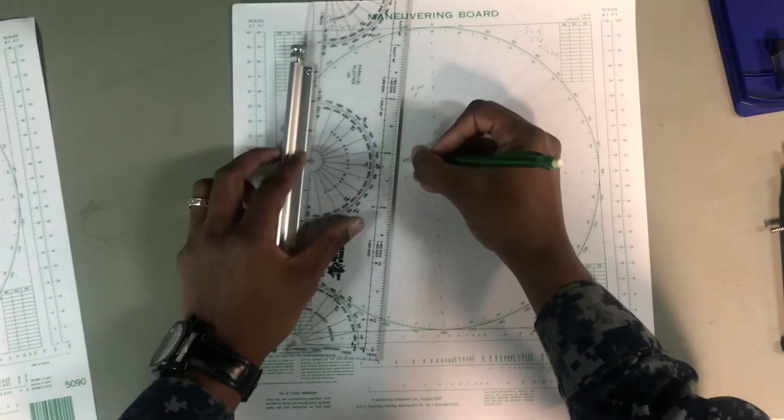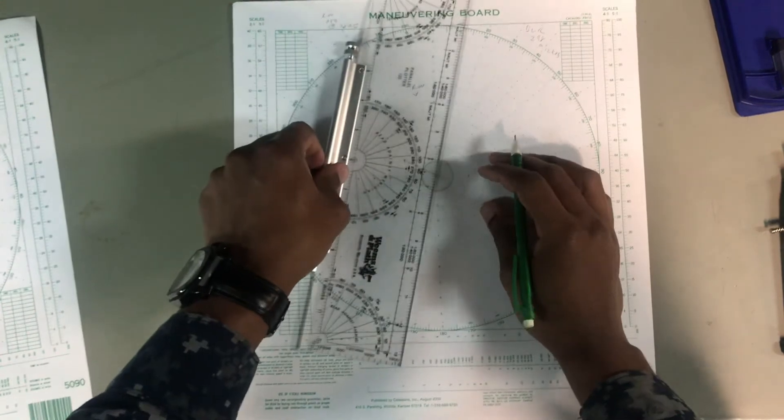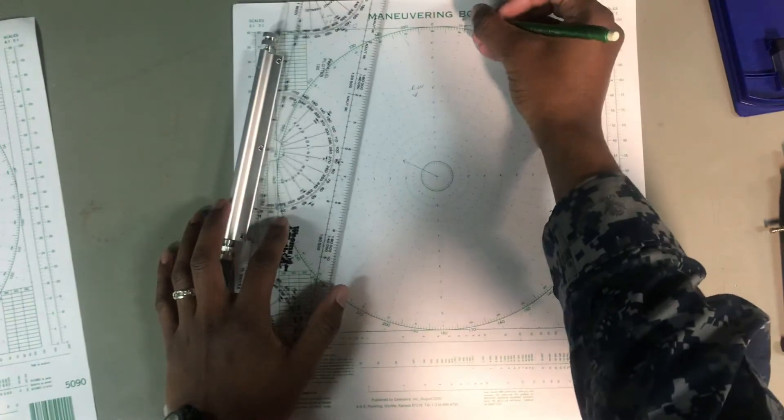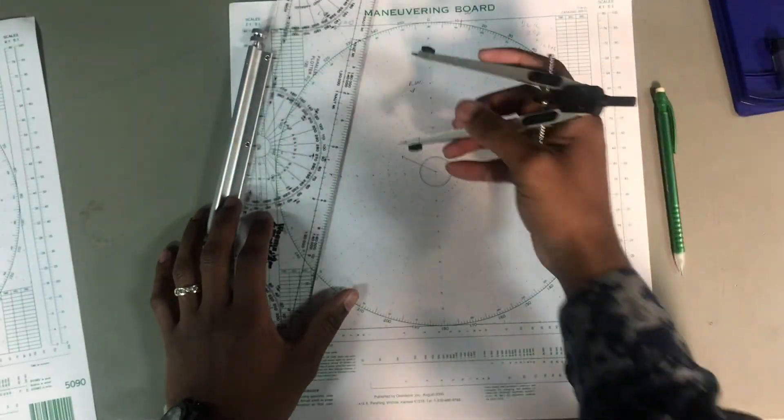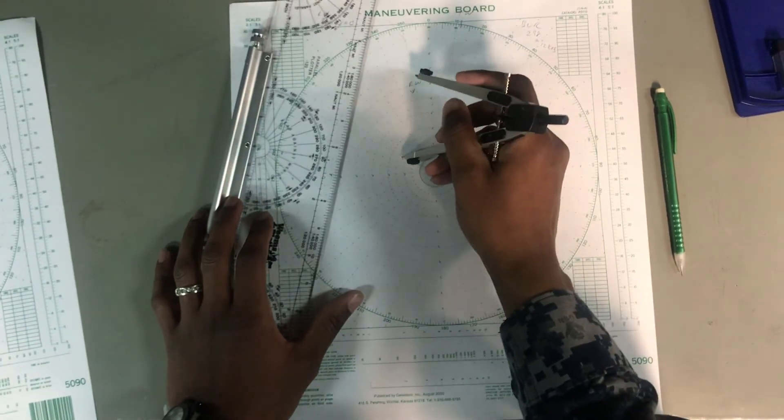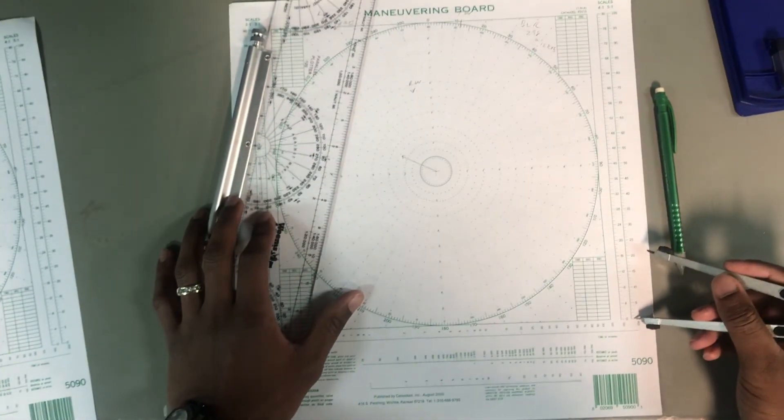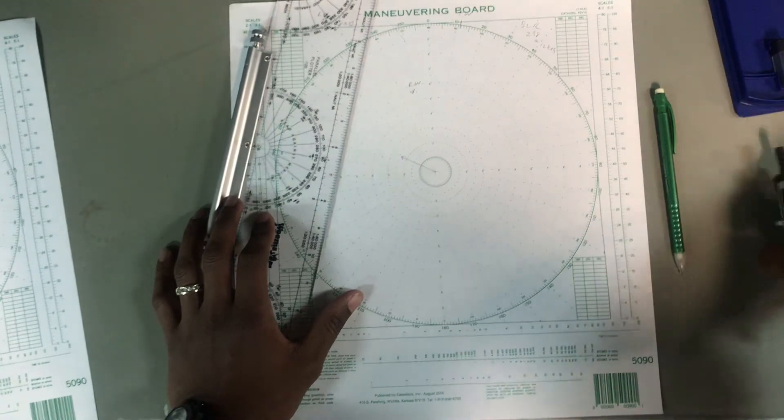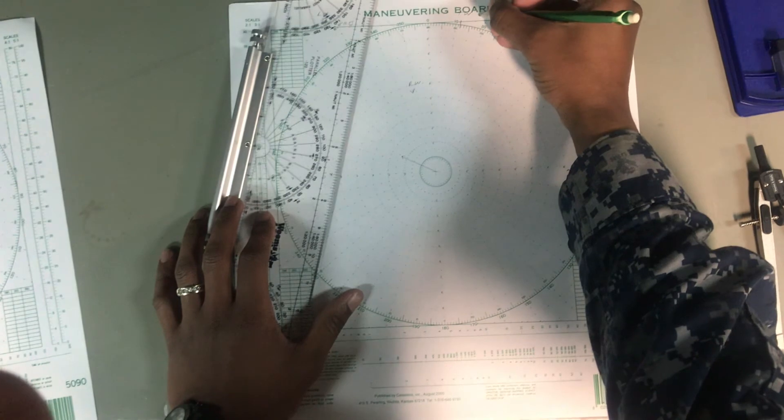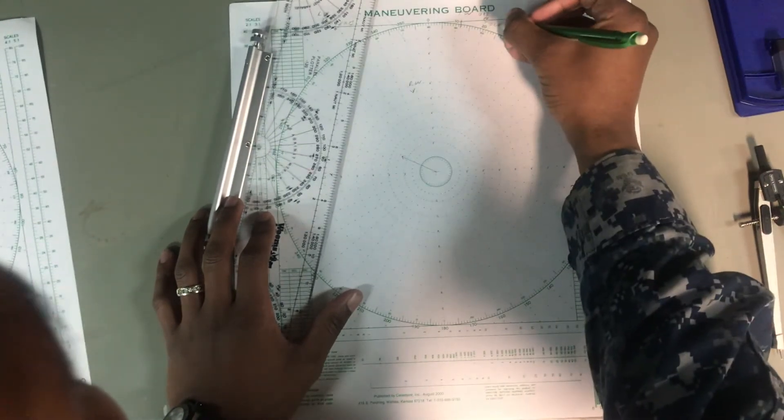Alright. So once again, the saying is, ship to wind, center of mo board. There's our true wind. And the distance from our ship's course and speed heading to that relative wind arrow, backwards arrow, is 22 knots. So in this mo board, true wind is 012 at 22 knots.